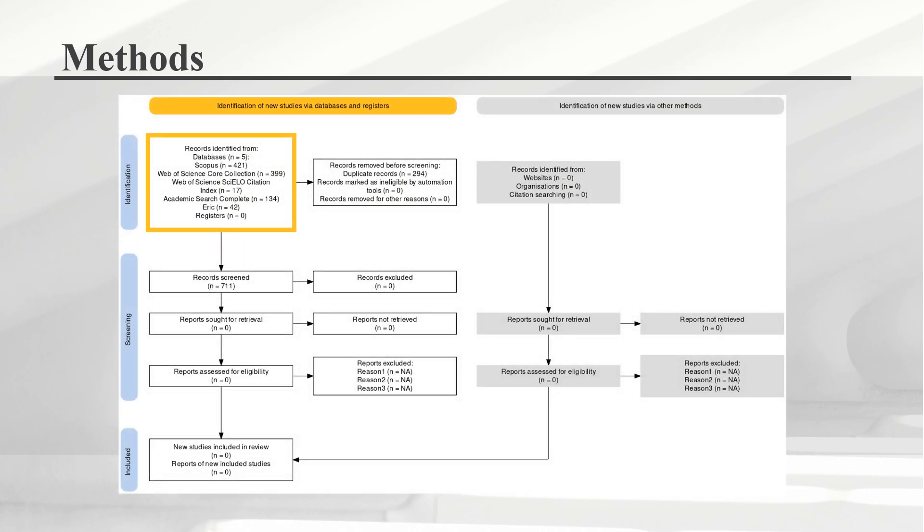With the Scopus search string as reference, equivalent search strings were constructed for the remaining four databases with the support of an information specialist. The database search was conducted on December 7th, 2023 and the PRISMA flow diagram was generated to document the process. The database searches yielded a total of 711 documents after the duplicate records removal. To mitigate publication bias, the corpus will also include grey literature with additional snowball strategies and web searches. The records screening phase is currently ongoing.